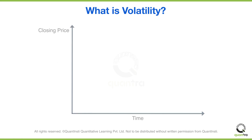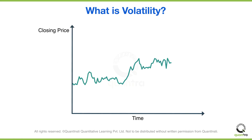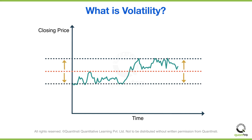For example, assume the close prices of an asset are represented by the green line and the red line represents the mean price. Then the simplest way to measure the volatility here would be to calculate the deviation of the prices from their mean.